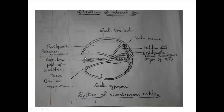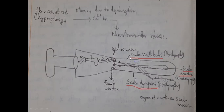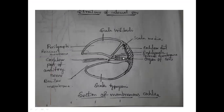Now let us look at the cross-section of the internal ear — the cochlea. Taking the section, we get this picture. You can see the upper chamber is the scala vestibuli, the lower one is the scala tympani, and the middle one is the scala media. On the basilar membrane you can see the presence of the organ of Corti, and there is a membrane above it — the tectorial membrane.